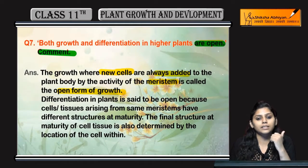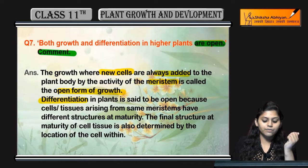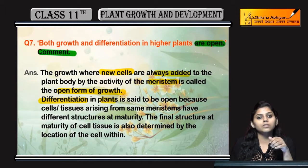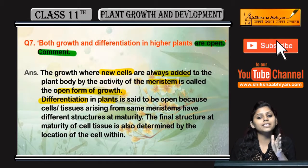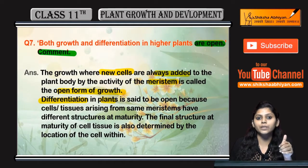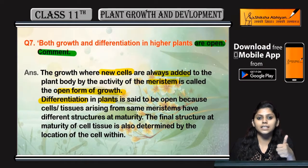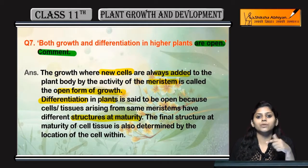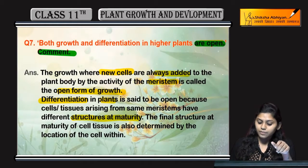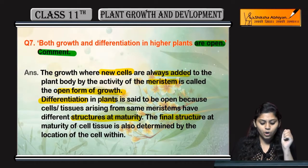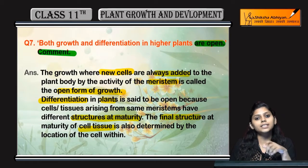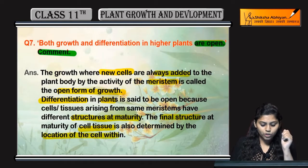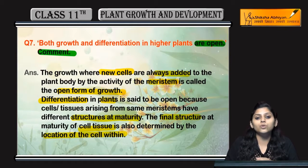Whereas differentiation ka hota hai jab plant mein — ye jo meristematic region se cell divide huye hain — ye ek proper function attain karte hain. Matlab yeh maturity reach karte hain, ek proper structure aur function inko assign hota hai. So yeh hai differentiation. The final structure at the maturity of cell tissue is determined by the location of the cell within.